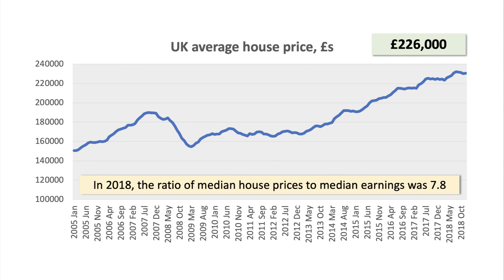The housing market is key. If you want a couple of stats: the average house price in the UK is now £226,000. Crucially, in 2018, in terms of affordability, the ratio of median house prices to median earnings was 7.8. This makes housing extremely unaffordable for people on average incomes.